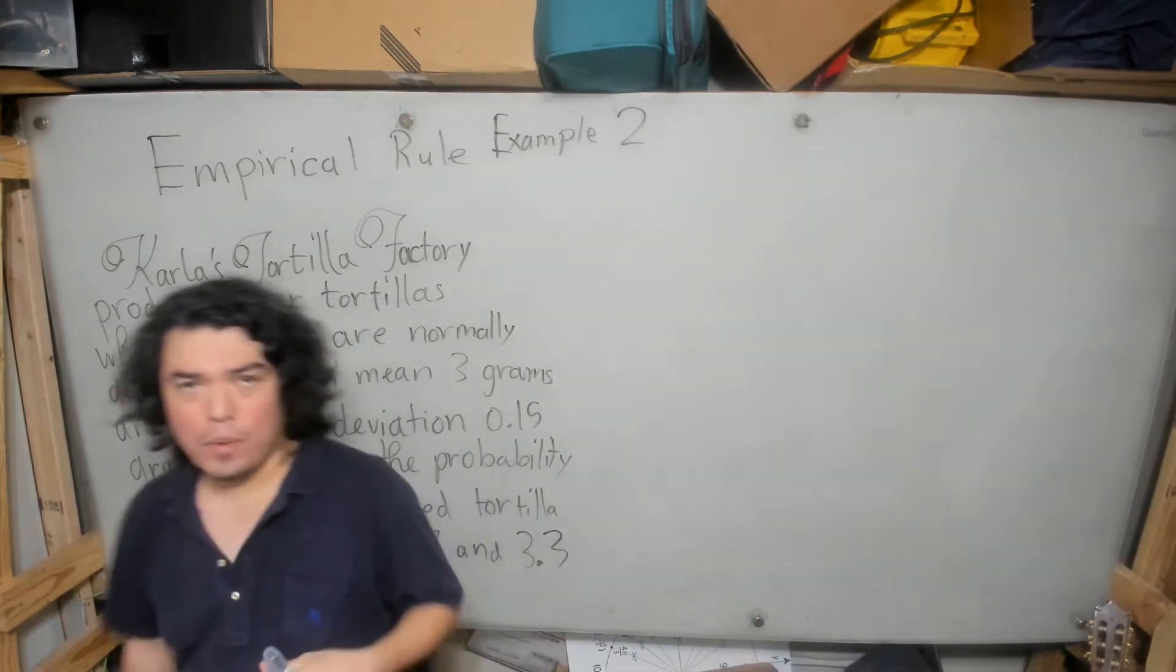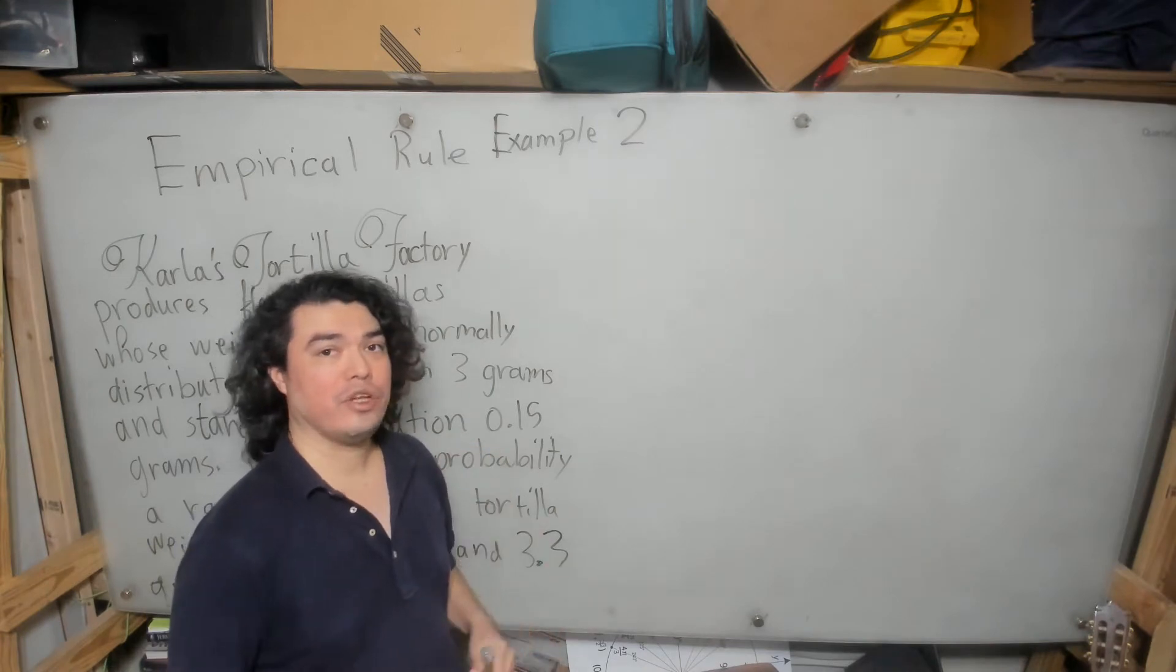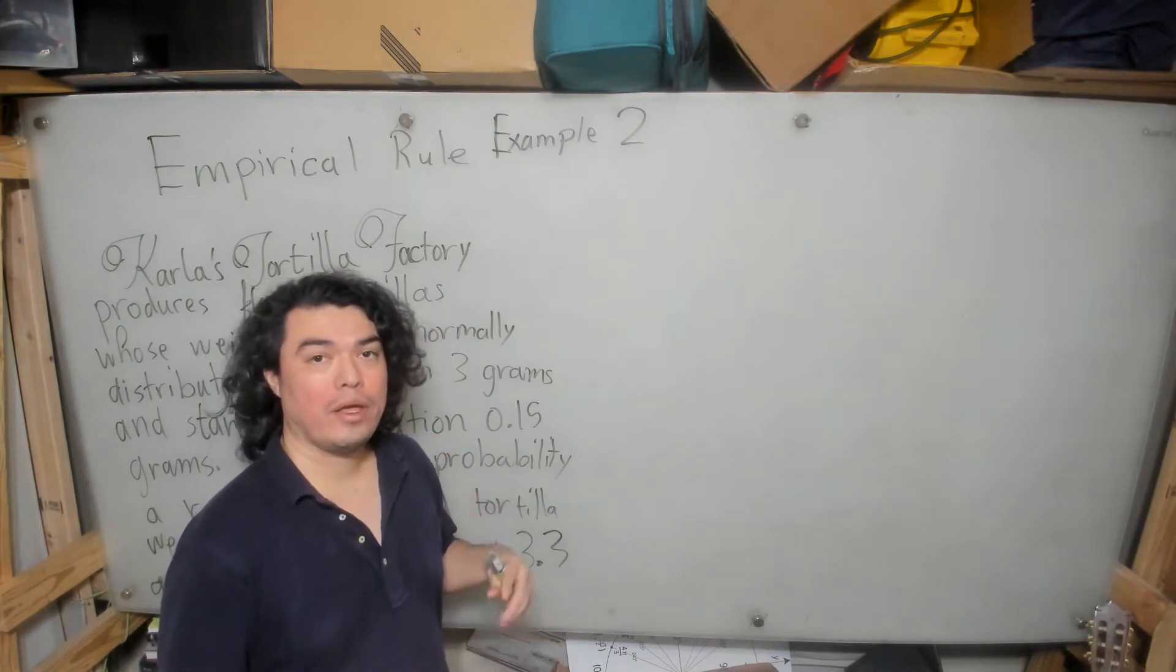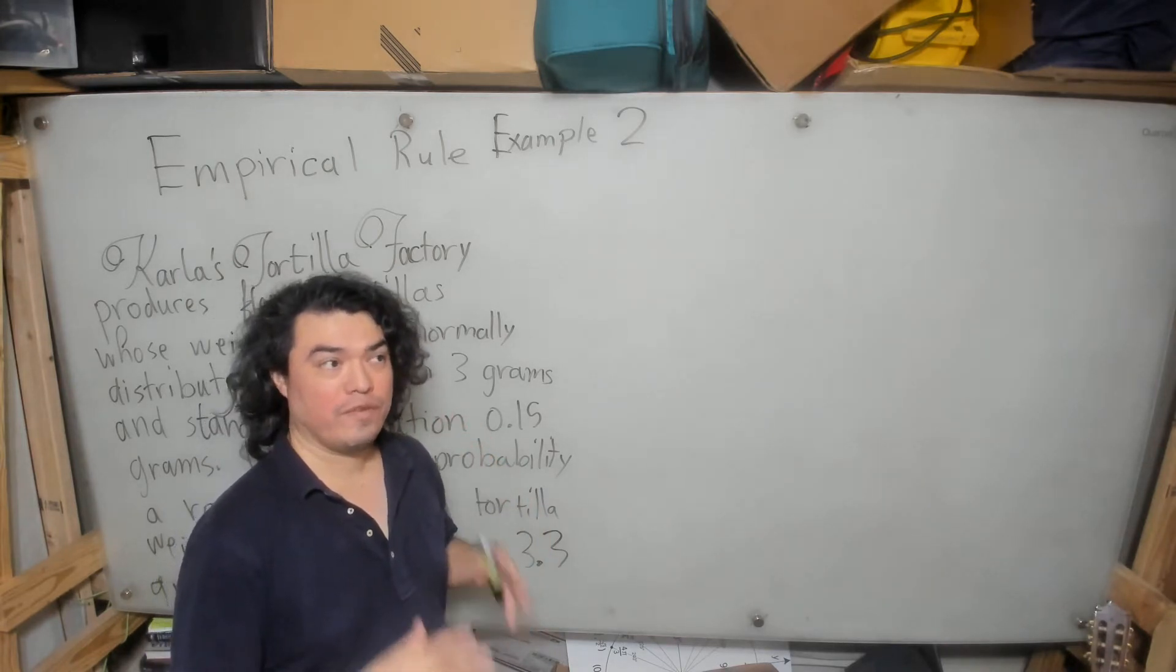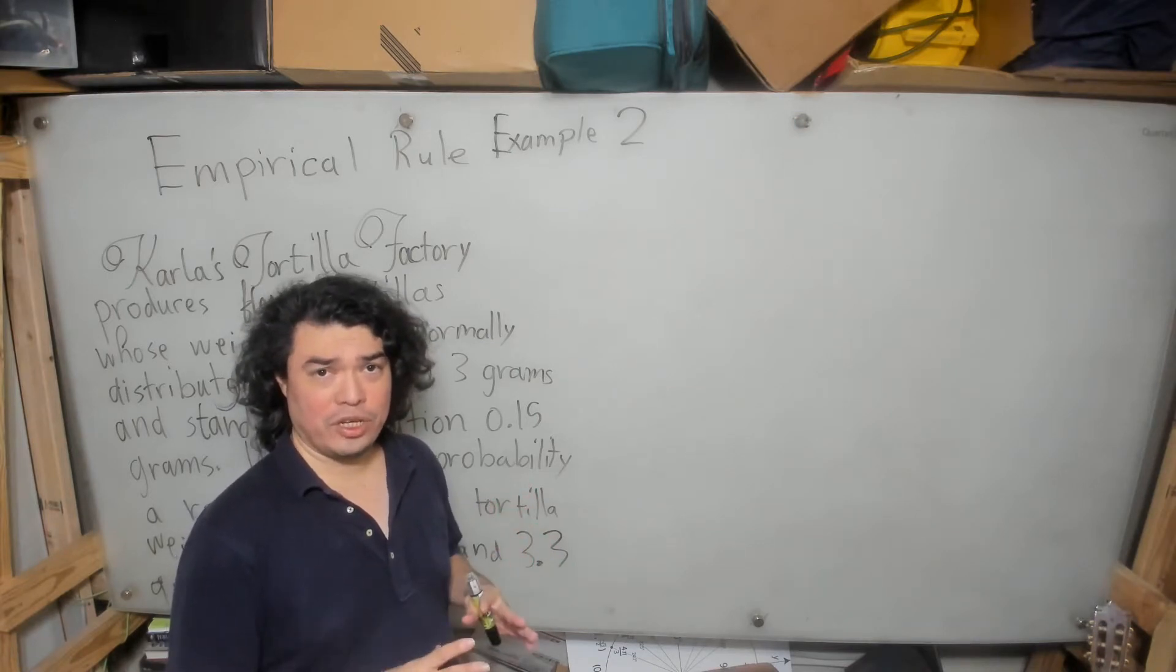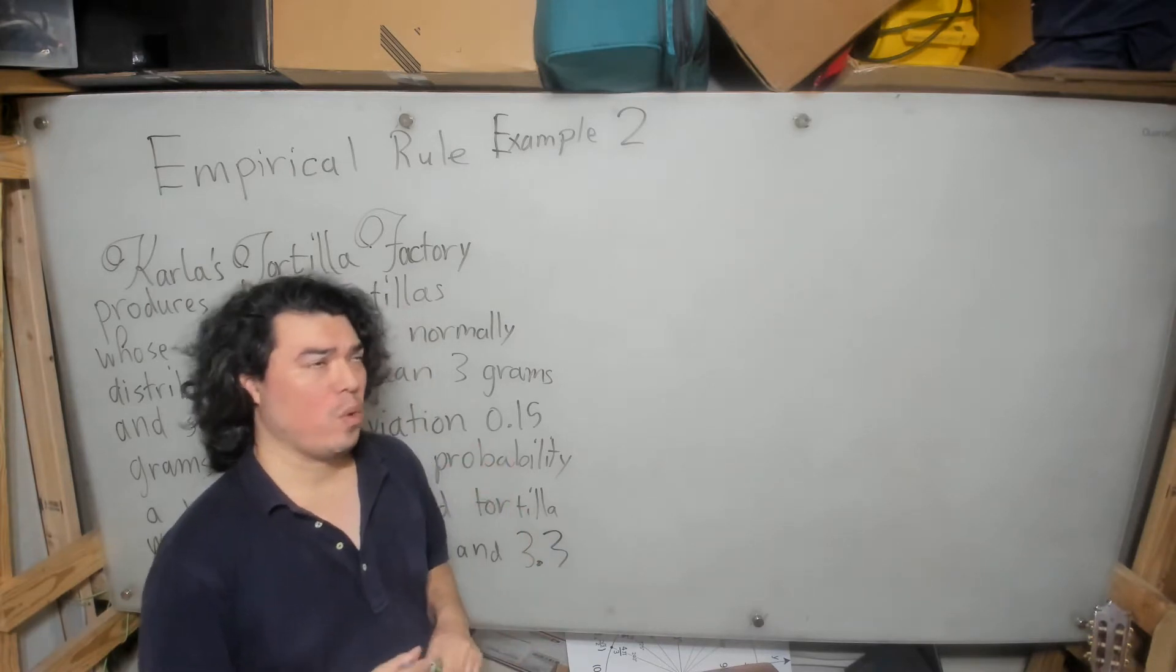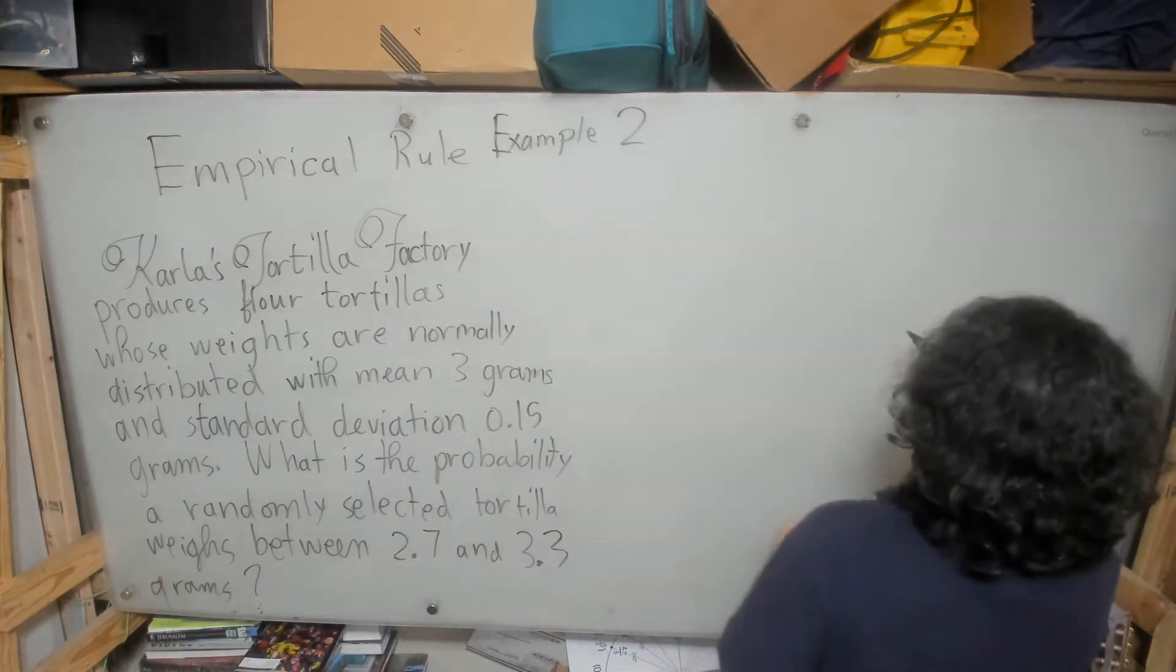Now again, what I want to do first before we actually try to solve it is I want to draw the bell curve and I want to label it properly because that way visually demonstrating or visually making a picture of what the problem is saying will help us to ensure that we're reading it properly and that we're solving for the right quantities and maybe might help us solve this problem in and of itself.